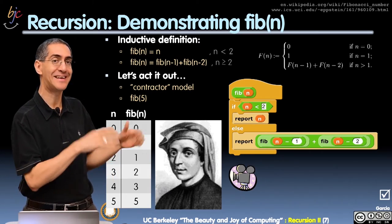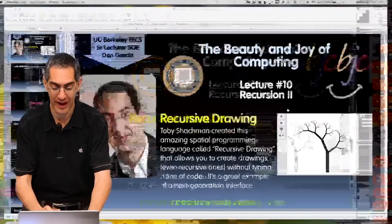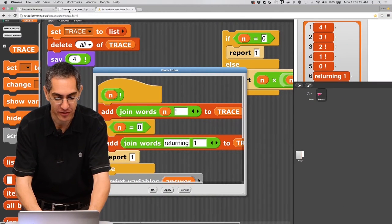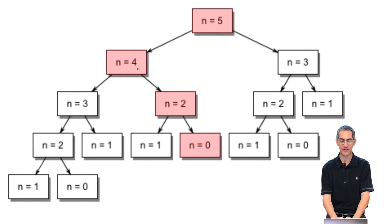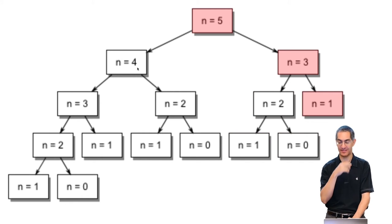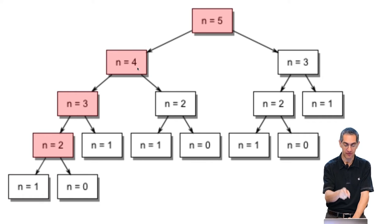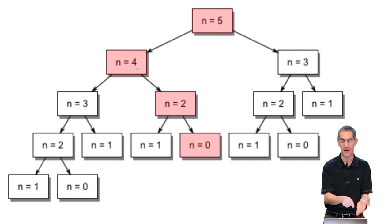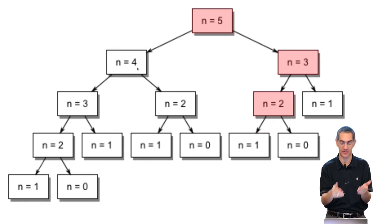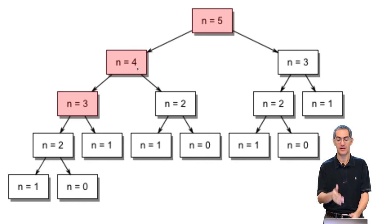Rather than try to act out the contractor model, I'm going to show you actually what happens in pictures. Look at this tree of calls. n equals five gets called. Five calls four, calls three, calls two, calls one. And two calls one and zero. Then two returns to three, who calls one, who returns to four, who calls two, which again calls one and then zero. Which goes back to five — and now five has half the answer. Then it goes on the right side of the tree to call three, which calls two and one.